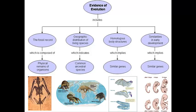Homologous body structure, which implies similar genes — and so here's tying evolution to DNA. The bat wing, the bird wing, and the insect wing actually have some common or similar structure, and that comes out of the DNA sequences.